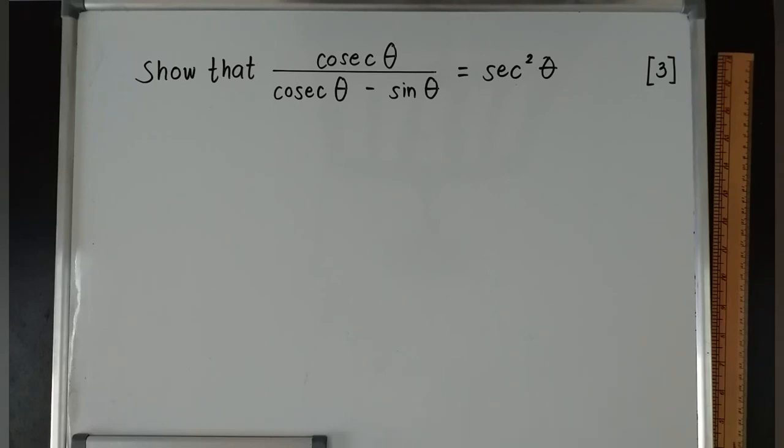We are going to answer the fifth question that I posted on our Facebook page, AdMaths plus Maths. The question is: show that cosec θ / (cosec θ - sin θ) = sec² θ. It is equivalent to three marks.